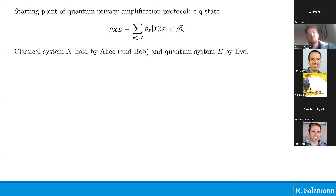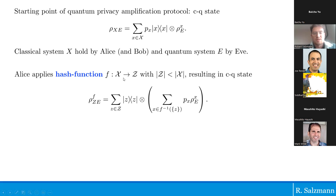In mathematical terms, the state at that point of the QKD protocol is described by a secure CQ state where X is held by Alice and Bob (perfectly correlated), and Eve has quantum side information ρ_E depending on X. The hash function f results in a new secure state on a smaller alphabet Z. Eve's register averages over all X corresponding to a certain set — a sub-normalized state — and what Alice and Bob want is to minimize the decoupling error.